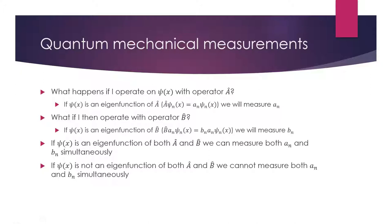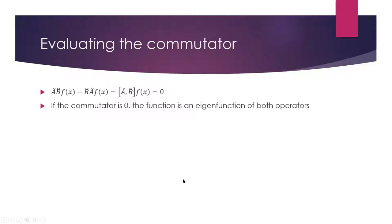We can see examples of this both in math and in experiments. The way we describe whether we can know two observables at the same time is by evaluating the commutator. We write this as operator A comma operator B operating on some function f — where f is just an arbitrary function. If the function is an eigenfunction of both operators, the operation returns two constants and the order of operations won't matter. Taking the difference gives zero. If the commutator is zero, we say the operators commute, and we can know their observables simultaneously.